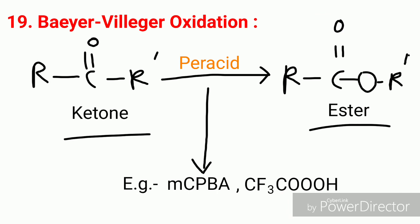The final and last reaction is a very important one: Baeyer-Villiger oxidation. In this reaction, a ketone is converted to an ester by a peracid — for example, mCPBA or CF₃CO₃H, etc.